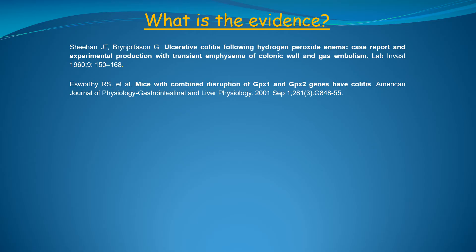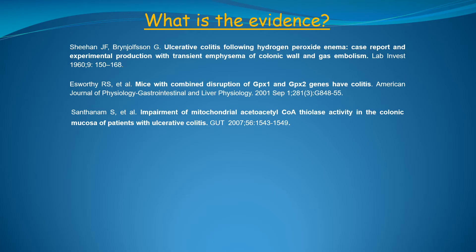This is not surprising, since hydrogen peroxide, but not superoxide, is chemotactic for neutrophils. So now we know that hydrogen peroxide enemas can cause ulcerative colitis in humans and animals, and additionally, colonic epithelial cells can generate sufficient hydrogen peroxide during normal metabolism to cause ulcerative colitis. The next piece of the puzzle is to find out if humans with ulcerative colitis have high levels of hydrogen peroxide within their colonic epithelial cells.